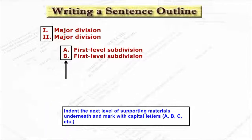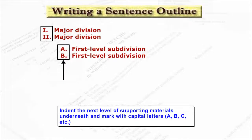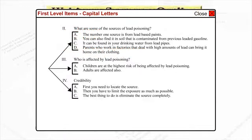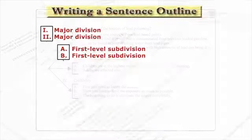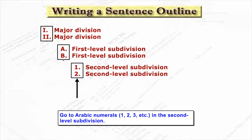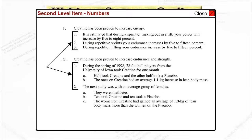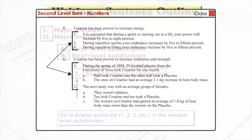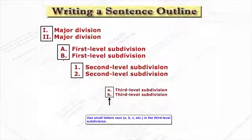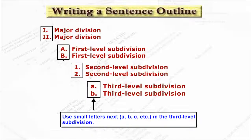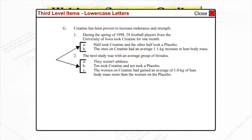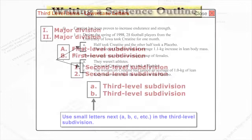Indent the next level of supporting materials underneath and mark with capital letters. Go to Arabic numerals 1, 2, 3, etc. in the second level subdivision. Use small letters next — lowercase a, b, c, etc. — in the third level subdivision.